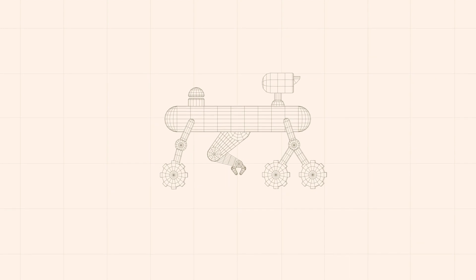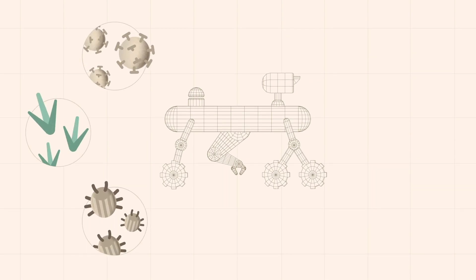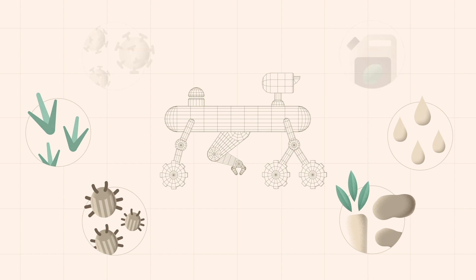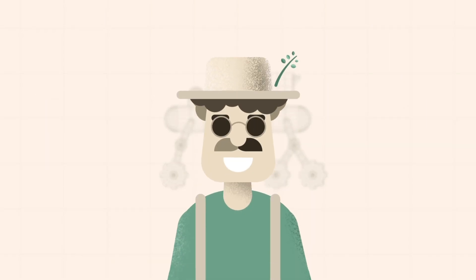Thanks to its cognitive abilities, Kurt can not only take care of all the work related to crop protection, but it also autonomously applies fertilizer, waters the plants and even harvests the crops. With Kurt's help, Karl saves a lot of time and can therefore make better use of his resources.